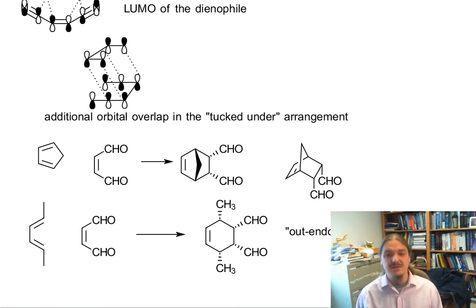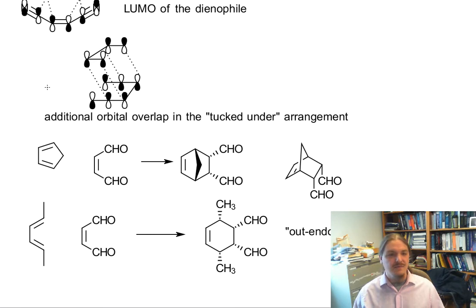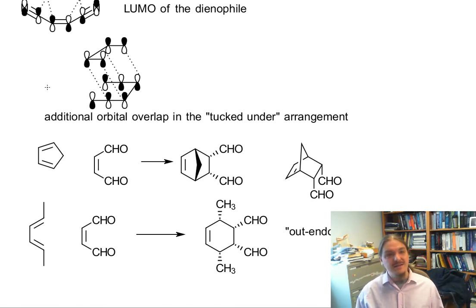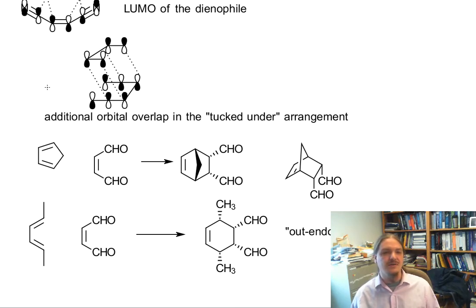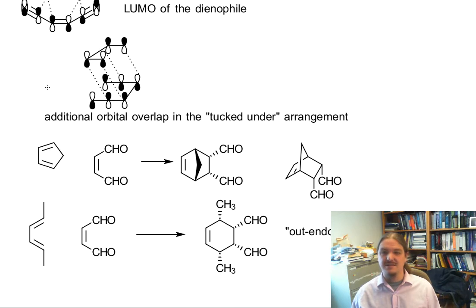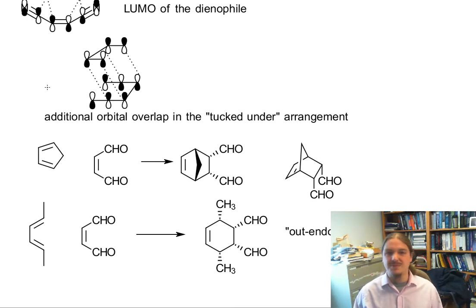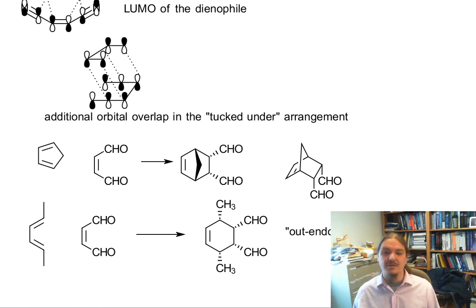This concludes the sequence of videos on the stereochemistry of the Diels-Alder reaction. I have a couple more videos planned: I want to talk about alkynes as a dienophile, regiochemical outcomes, and synthesis — specifically, if you have a product that looks like it was made from a Diels-Alder reaction, how can you predict what diene and dienophile might have been used? Thank you for watching.